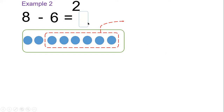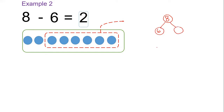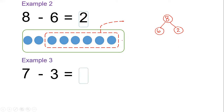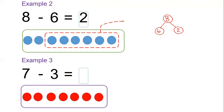When we show it using a number bond, we can have eight as the whole, then we have six, and the remaining part is two — so six and two make eight. Another example: let's show seven dots — one, two, three, four, five, six, and seven.